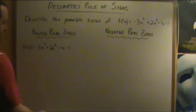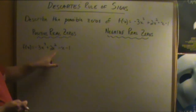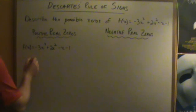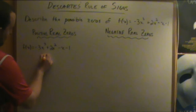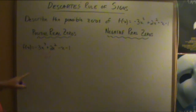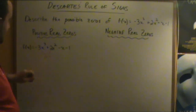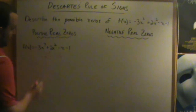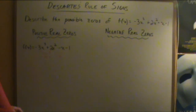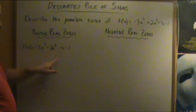If we look at that function, what we have to look at is how many times the coefficients change signs. From negative 3x cubed to positive 2x squared, it changes sign — from a negative to a positive. Then from 2x squared to negative x, it changes sign once more — from positive to negative. Then from negative x to negative 1, it stays the same.